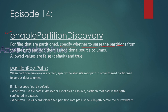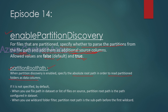The 'Enable Partition Discovery' option is used to specify whether to parse the partitions from the file path and add them as additional source columns or not. Basically, it is used to find out the file path and add that path as an additional source column while copying the data. The allowed values are false and true, and by default it is set to false. Once we set it to true, we will see the 'Partition Root Path' option.